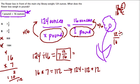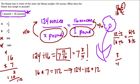12, 16, divided by 2, divided by 2. That gives me 6 over 8. Divide by 2 again. Divide by 2. We get 3 over 4. So this really equals 7 and 3/4, which is the answer for B.